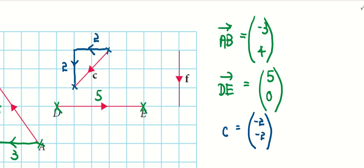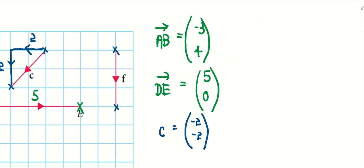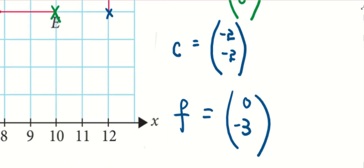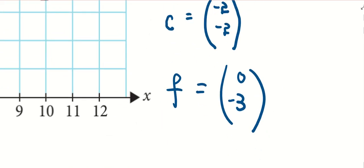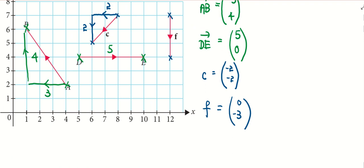Likewise, for this particular vector F, the start point is the top, the end point is the bottom. It's denoted by F, so I can write the column vector. You can see the vector F is 0, negative 3 based on the diagram.